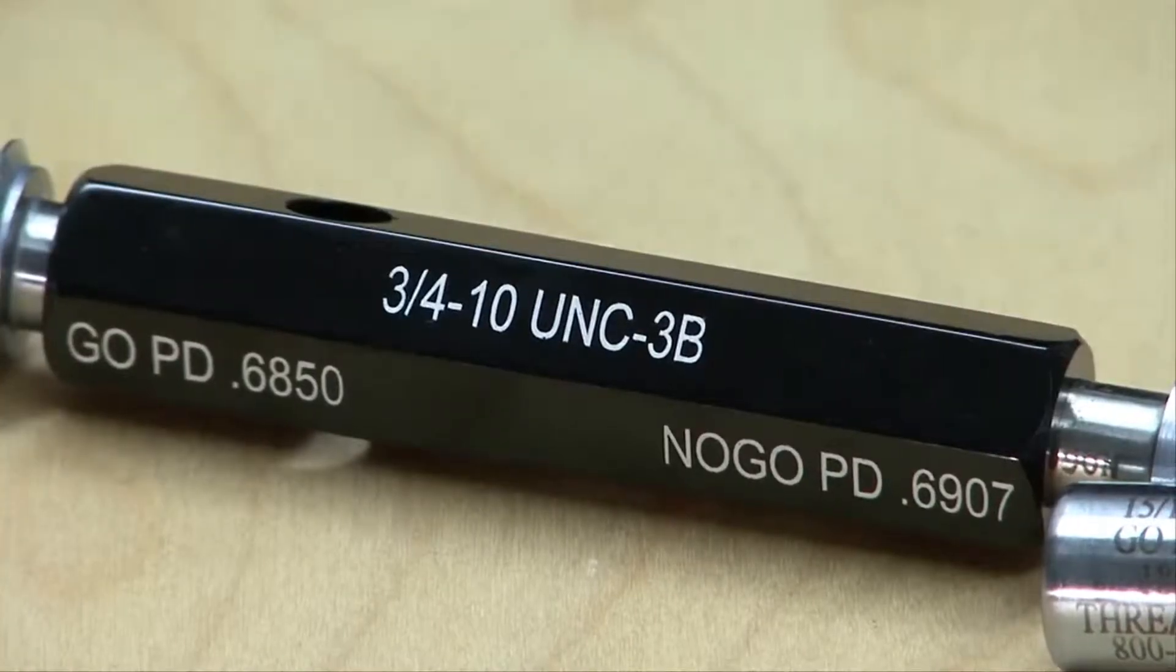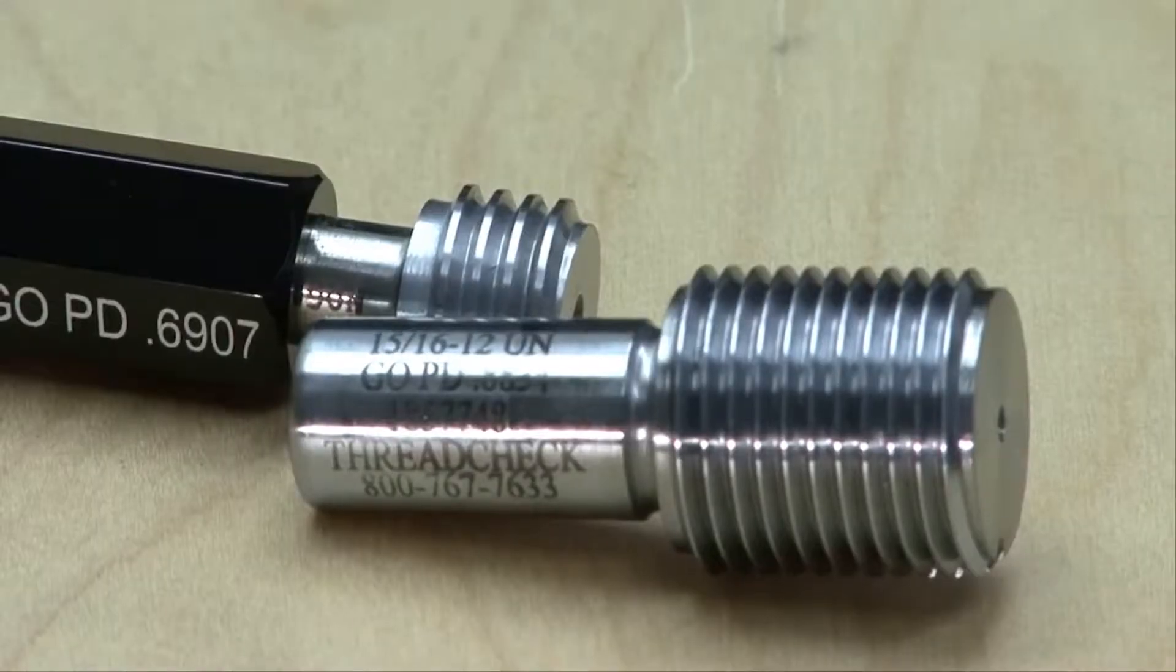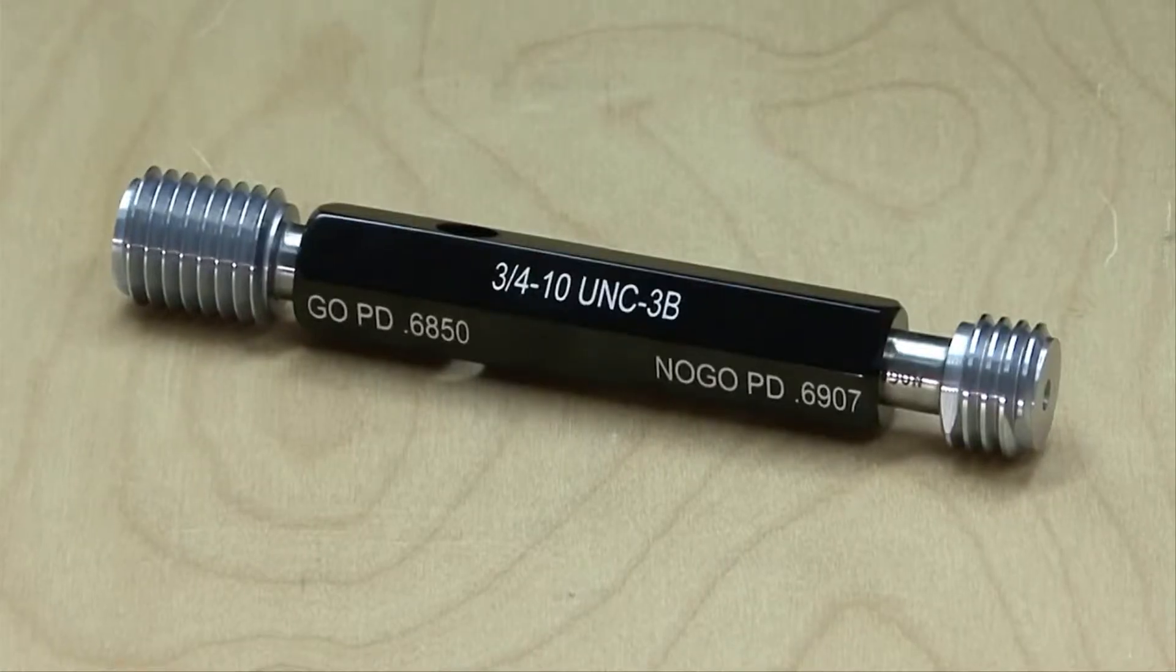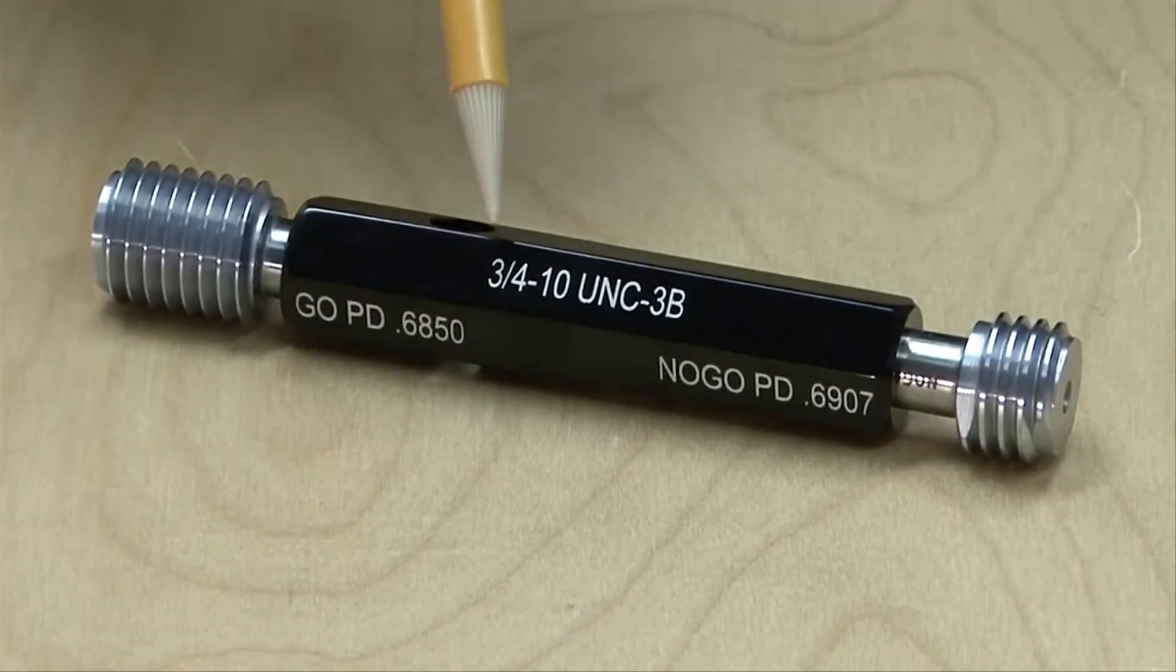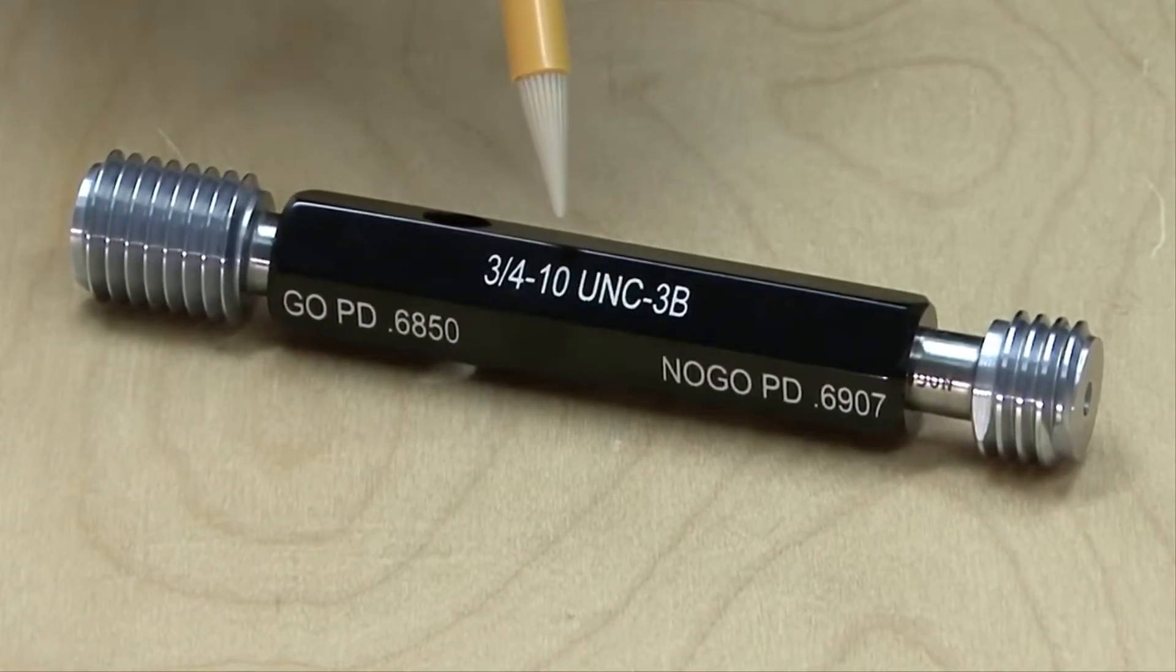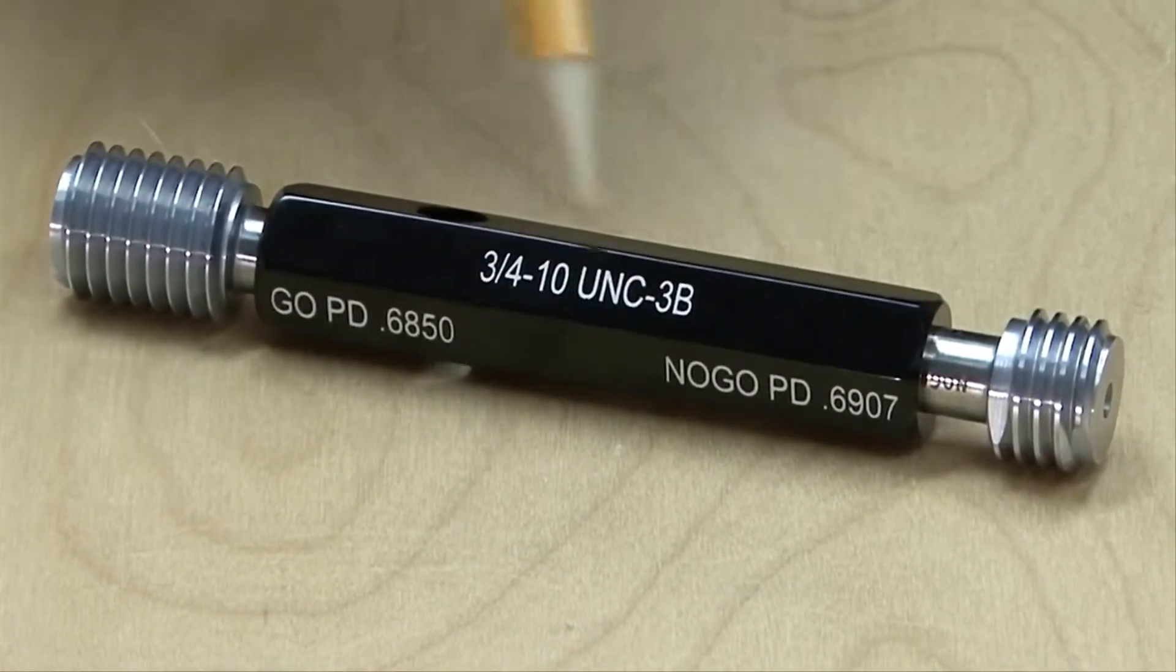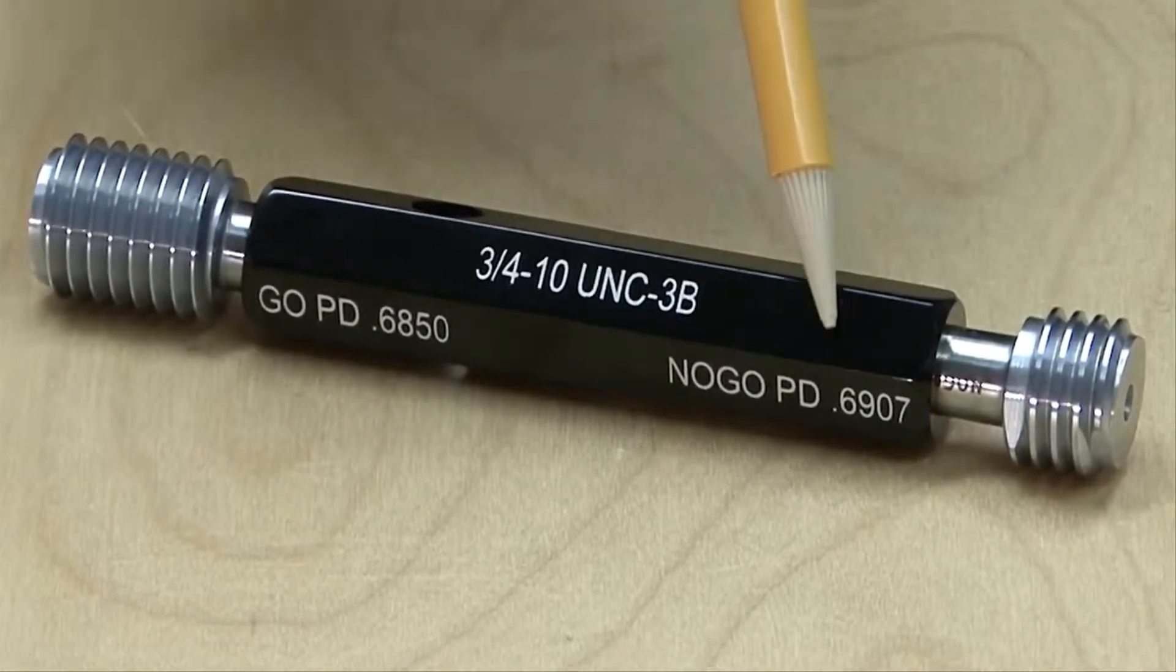Thread plug gauges should be clearly labeled on the handle and the gauge members. The user should ensure that the correct major diameter, TPI or pitch, class of fit, and go and no-go pitch diameters are clearly specified.